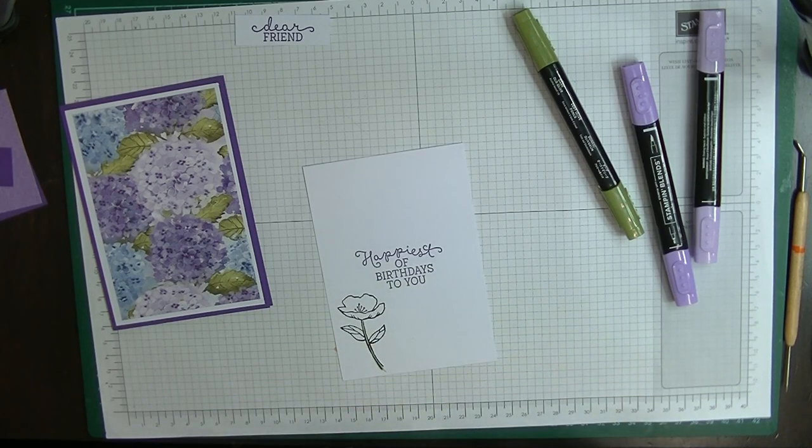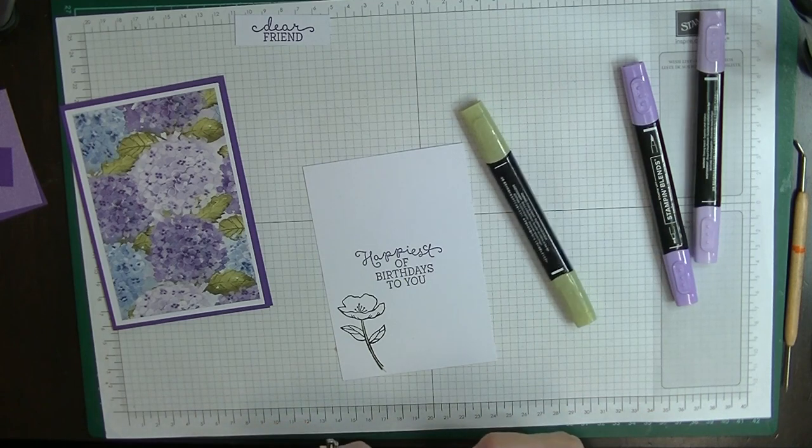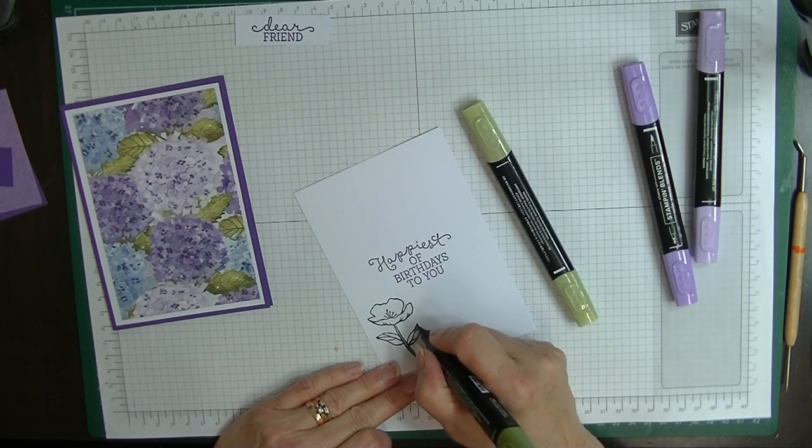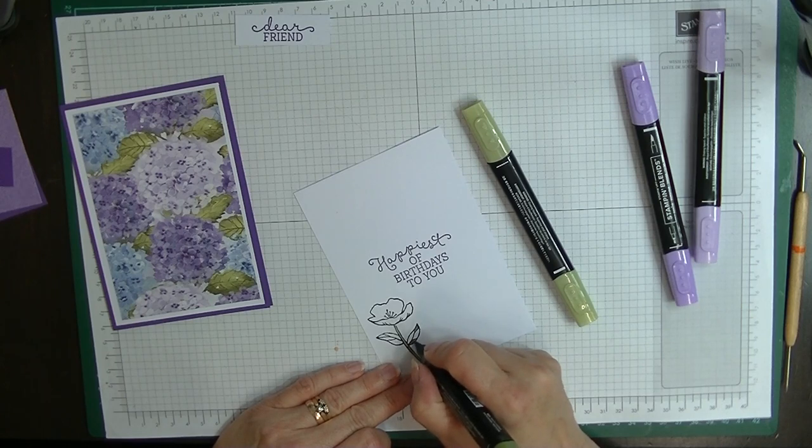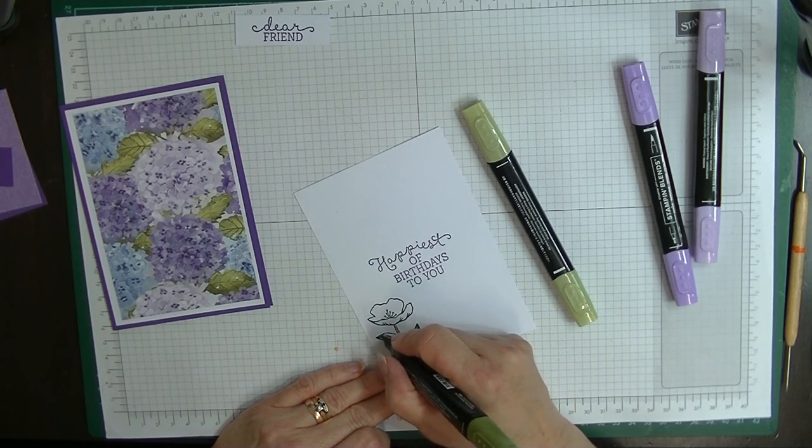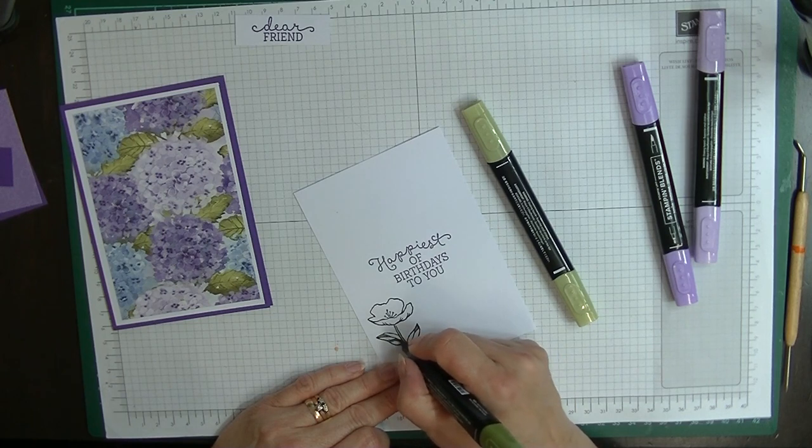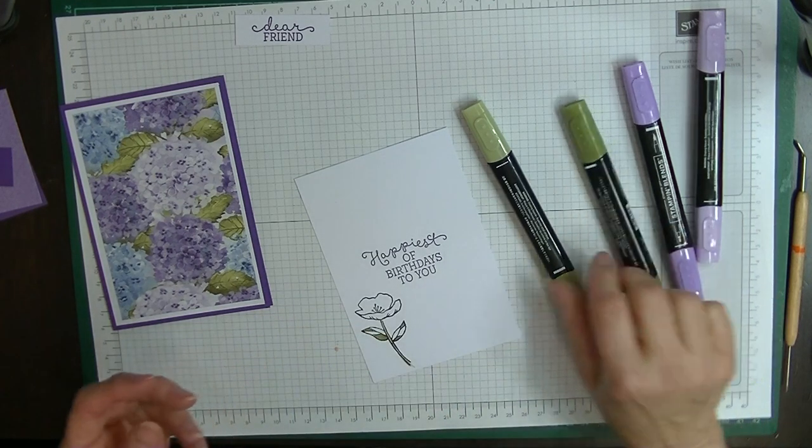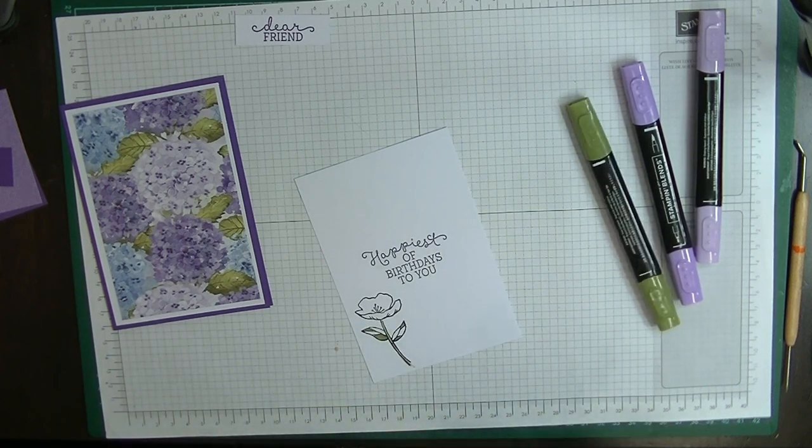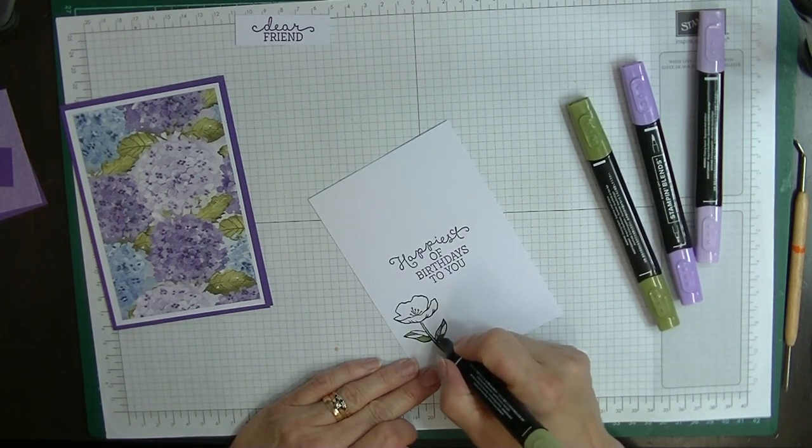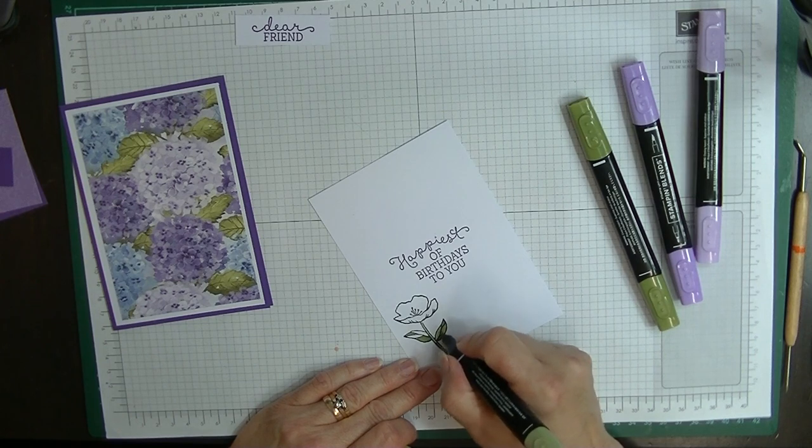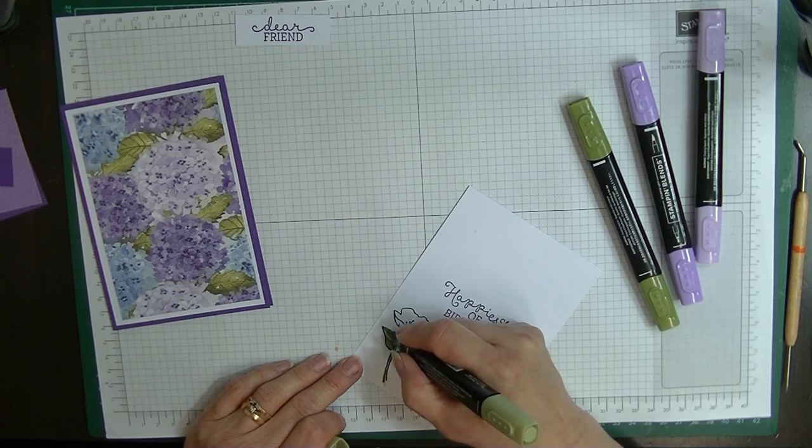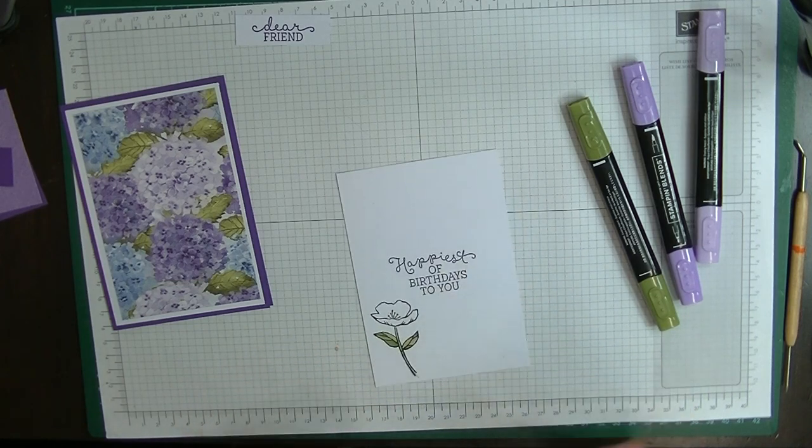Just do my stem in the light. With my leaves, I'm going to do parts of them in the dark and parts of them in the light and then blend them over the tip of one another.